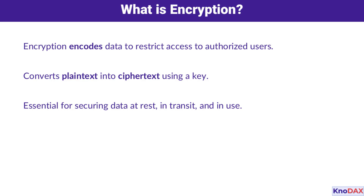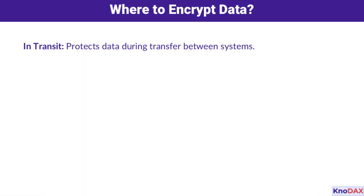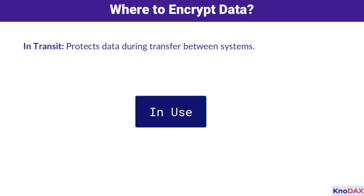But where should we focus our encryption efforts? Let's find out. Encryption works in three key areas: in transit, at rest, and in use.